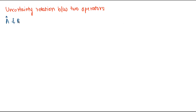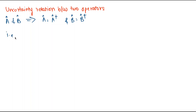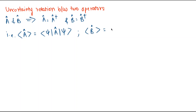Let's take two operators A-cap and B-cap which are Hermitian, which implies that A-cap equals A-cap dagger and B-cap equals B-cap dagger. Now let the expectation value of A-cap and B-cap with respect to a normalized state psi be given by: expectation value of A-cap equals bra-psi A-cap ket-psi, and similarly for B-cap, bra-psi B-cap ket-psi.